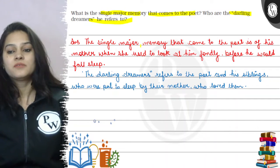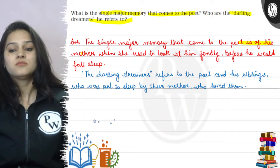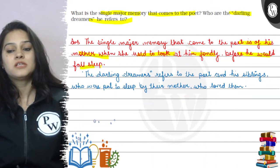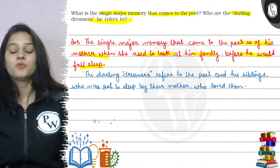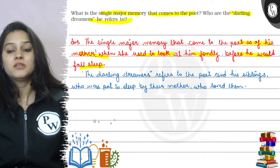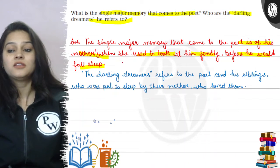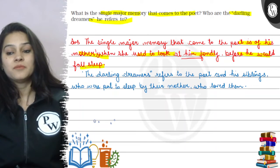The single major memory that comes to the poet is of his mother, when she used to look at him fondly before he would fall asleep.